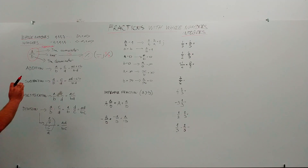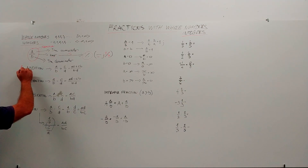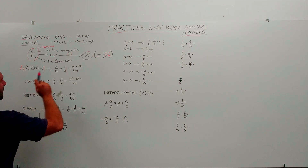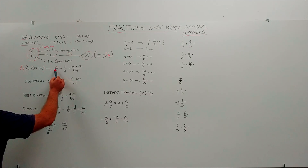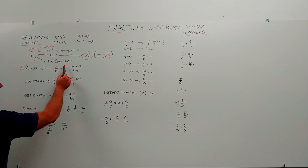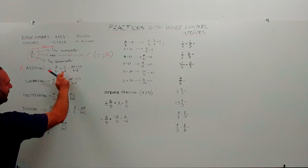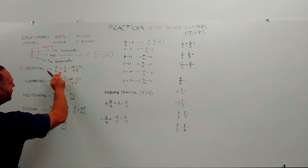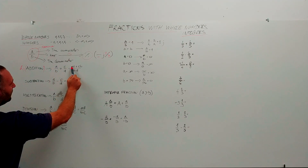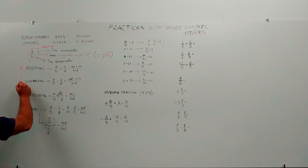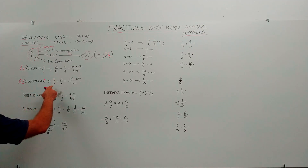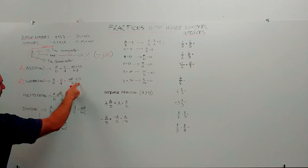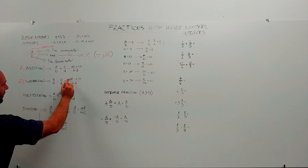Addition of fractions is rule number one. Rule one — Addition: fraction A over B plus C over D equals, in the lower part B multiplied by D, and in the upper part A multiplied by D plus C multiplied by B. Rule number two — Subtraction: A over B minus C over D equals, in the lower part B multiplied by D, and in the upper part cross multiplication: A multiplied by D minus C multiplied by B.